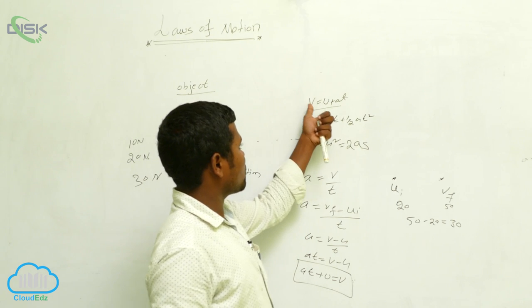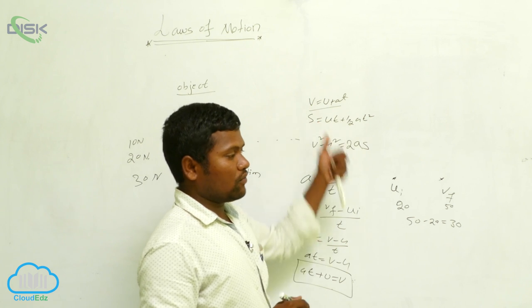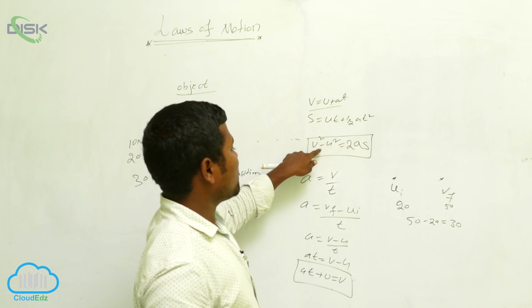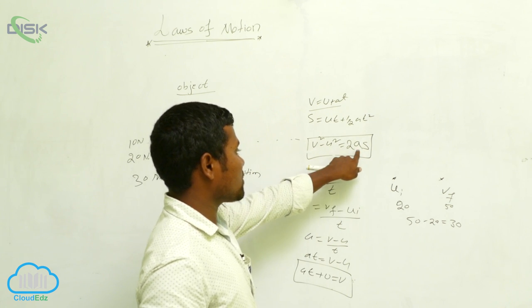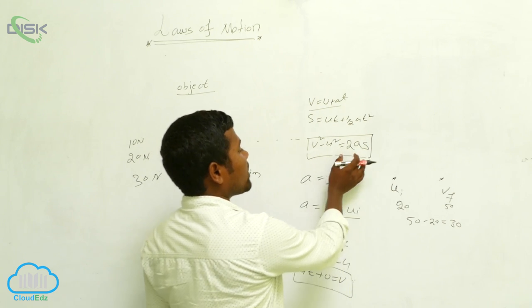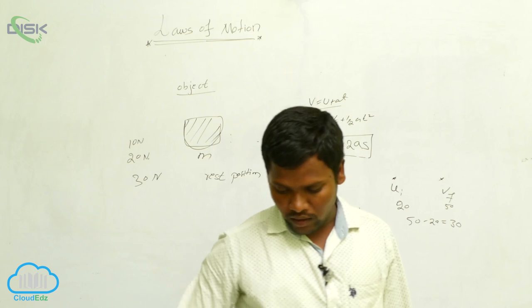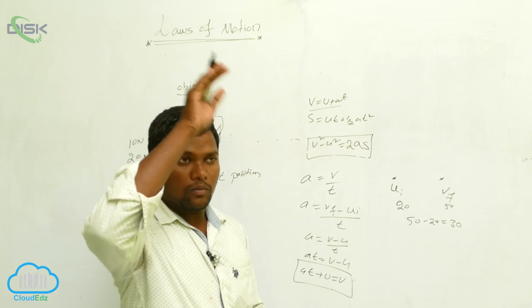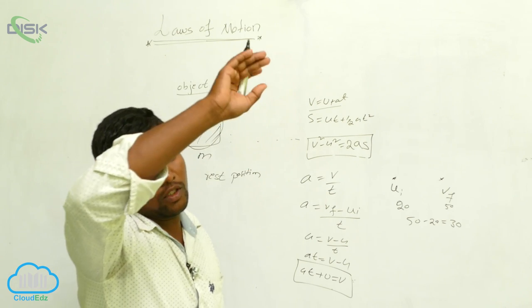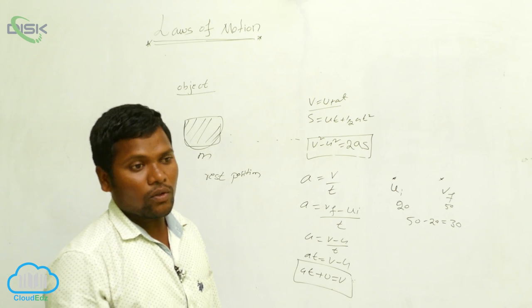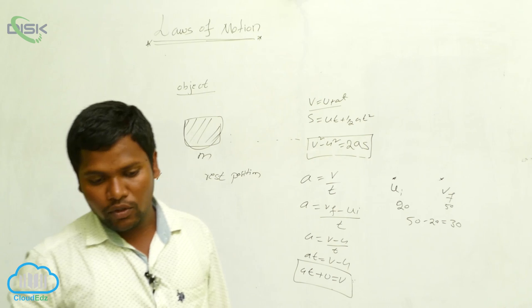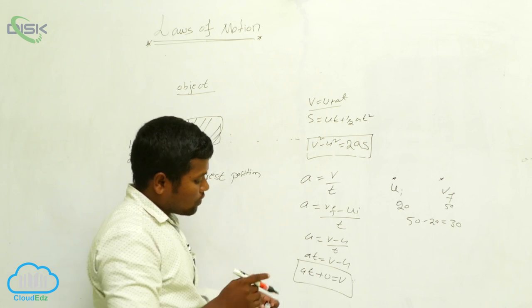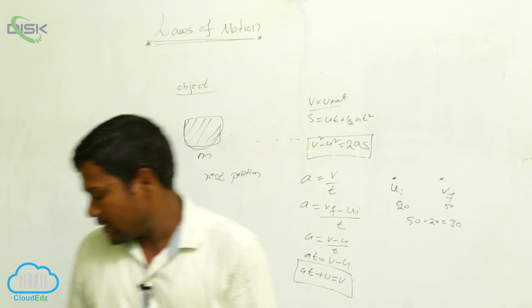To use these equations, we need initial velocity, final velocity, time, acceleration, and displacement. Now consider a stone falling from a building — why does it come down and not go up? Some force is acting on it. We will discuss that force especially in this lesson.